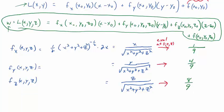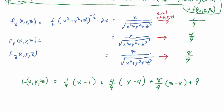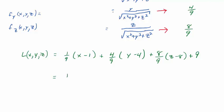And then it's just a matter of filling in this tangent plane equation. So if you do that, you should get that L of x, y, z is equal to 1 ninth times x minus 1, plus 4 ninths times y minus 4, plus 8 ninths times z minus 8, plus the function evaluated at 1, 4, and 8. And that turns out to be 9. And if you multiply all these out and combine like terms, it works out real nice. You end up with 1 ninth x plus 4 ninths y plus 8 ninths z, and all the constants cancel out. So you end up with this is your linearization.